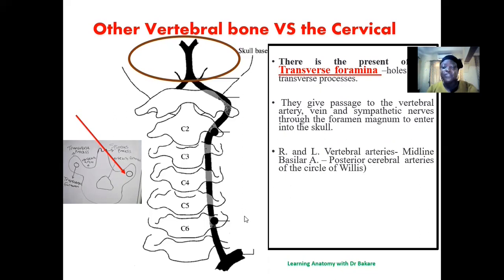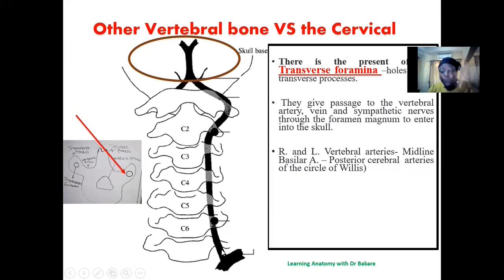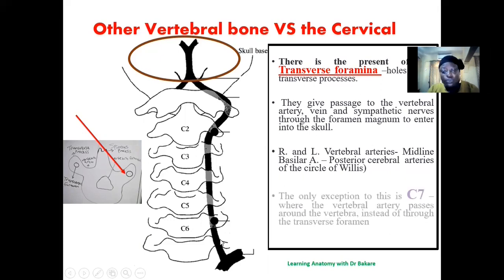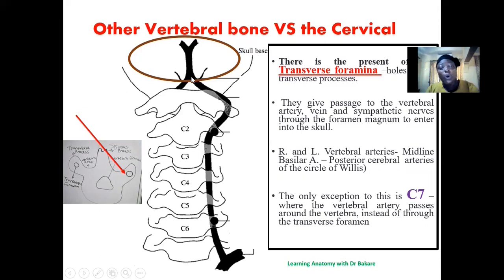It is created to allow the passage of the vertebral artery, which branches from the subclavian artery. The subclavian supplies structures of the limb but also gives branches upward. The vertebral artery — right and left — enters into the transverse foramen of the cervical vertebra and runs upward. This foramen creates protection for the vessel so that it is well guided and protected.